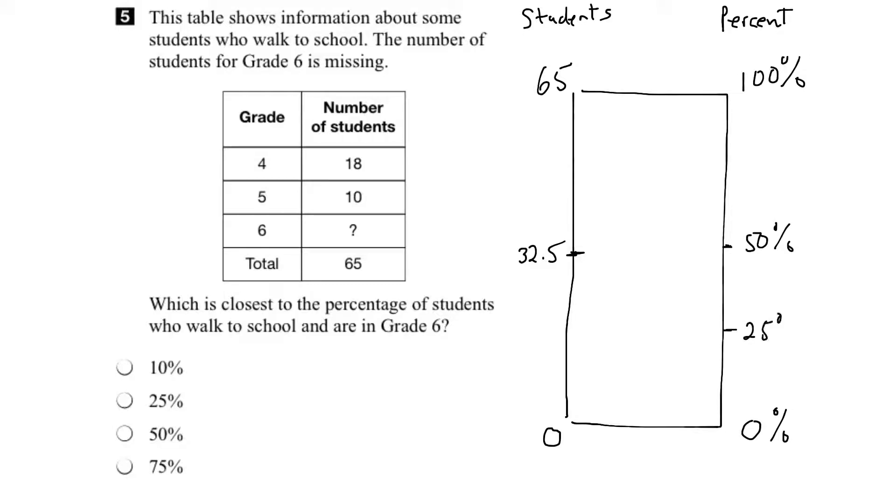That's 25%. So what we want to do is take this 32 and a half and then break it up into half again. So half of 32 and a half, it would be about here and that would be 16.25.